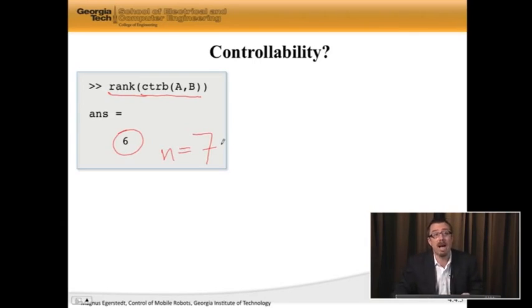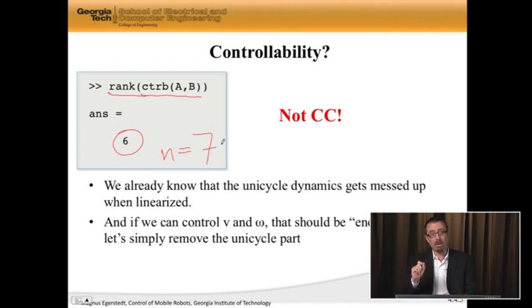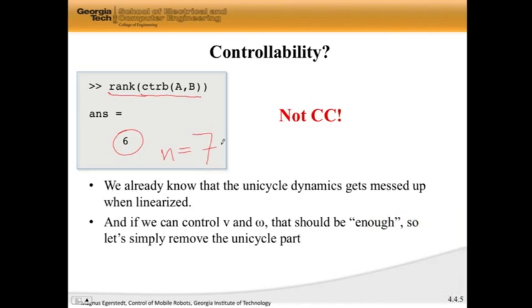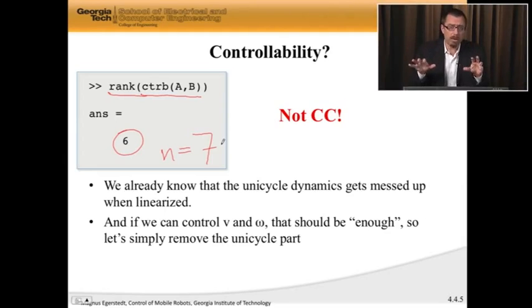Which means that the rank of the controllability matrix is not equal to seven. So this is not a completely controllable system. The problem here is the unicycle. We've already seen that when we linearize the unicycle, the dynamics gets messed up. We can't move in the y direction. What that means is we have no way of moving sideways, basically. So the unicycle is what's making life hard for us here.